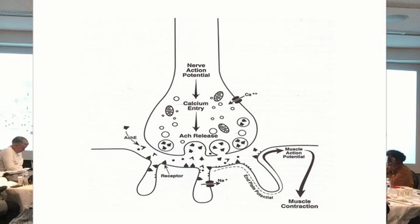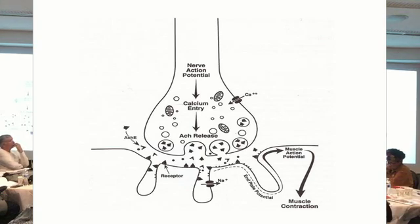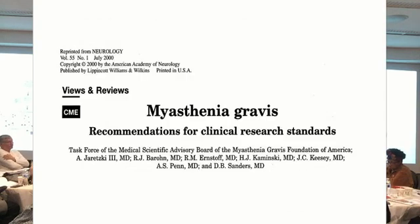This is the nerve, and then this is the muscle. The problem in MG is this triangle here — the acetylcholine receptor. If you have an antibody that binds to the receptor and blocks it, then the signal doesn't go from the nerve to the muscle, and then you get weak. That's the basis of it. These antibodies were first found in 1973 and 1974.